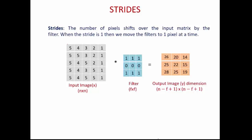If you want to find out element (1,1) of your output image, keep your filter on this box of the input image. Element-wise multiplication and sum of this value produces 26. To find the next element, 20, keep your filter shifted 1 pixel to the right. Similarly, for element (2,1), keep your filter on this box to find 25. Next elements are calculated similarly.